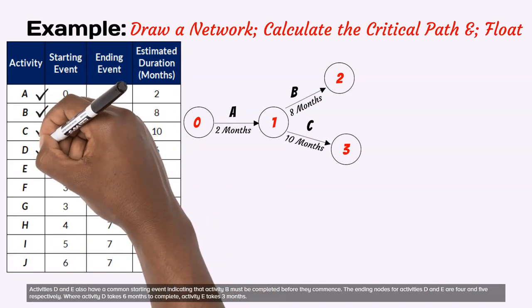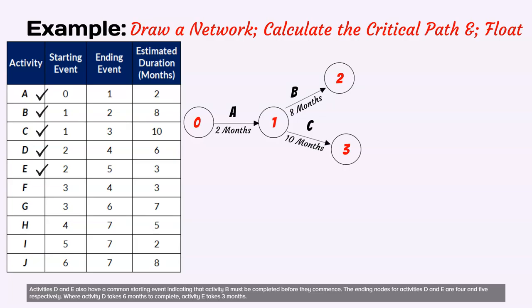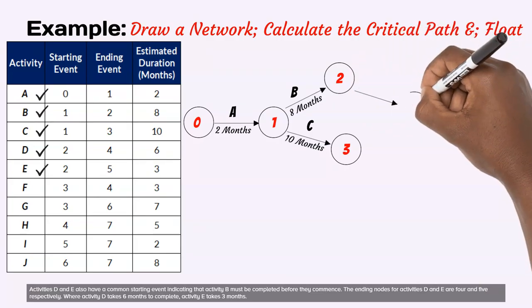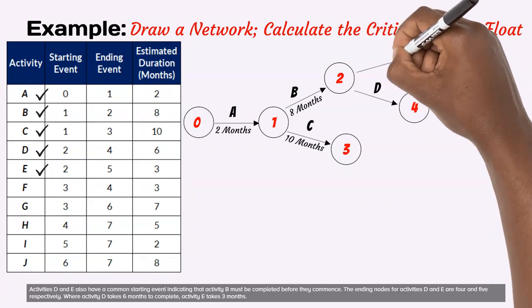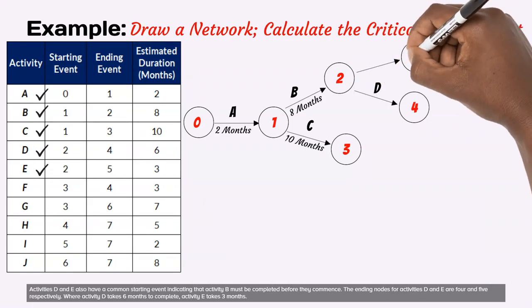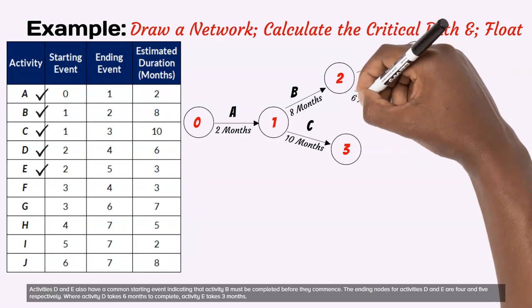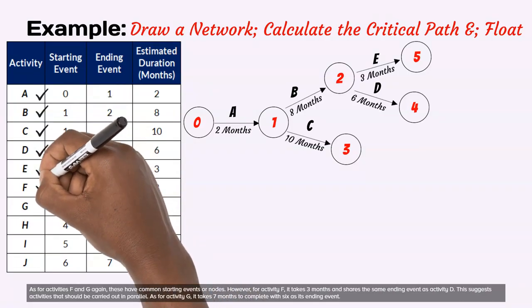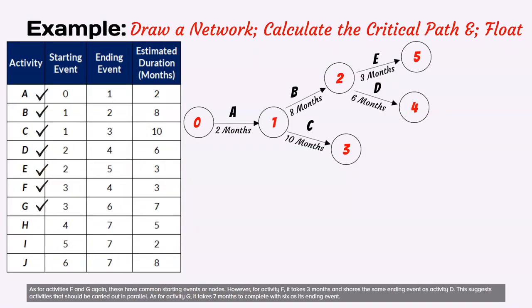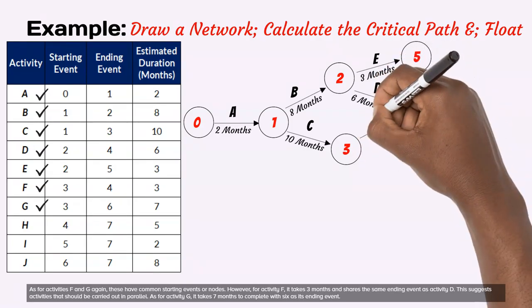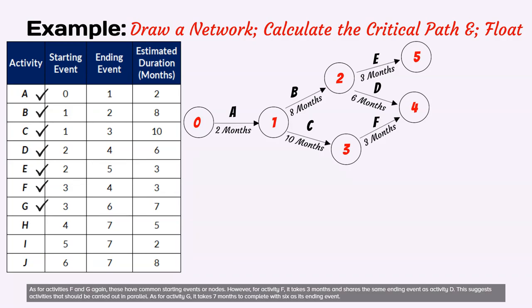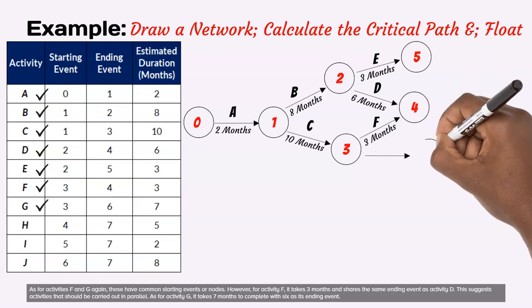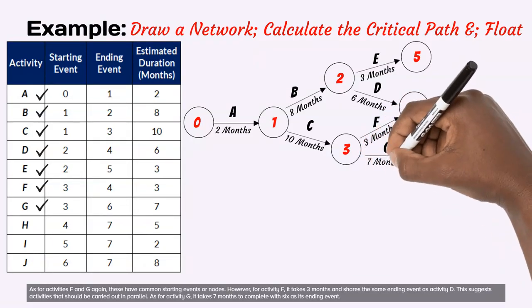Activities D and E also have a common starting event indicating that activity B must be completed before they commence. The ending nodes for activities D and E are 4 and 5 respectively. Where activity D takes 6 months to complete, activity E takes 3 months. As for activities F and G, these have common starting events or nodes. However, for activity F, it takes 3 months and shares the same ending event as activity D. This suggests activities that should be carried out in parallel. As for activity G, it takes 7 months to complete with 6 as its ending event.